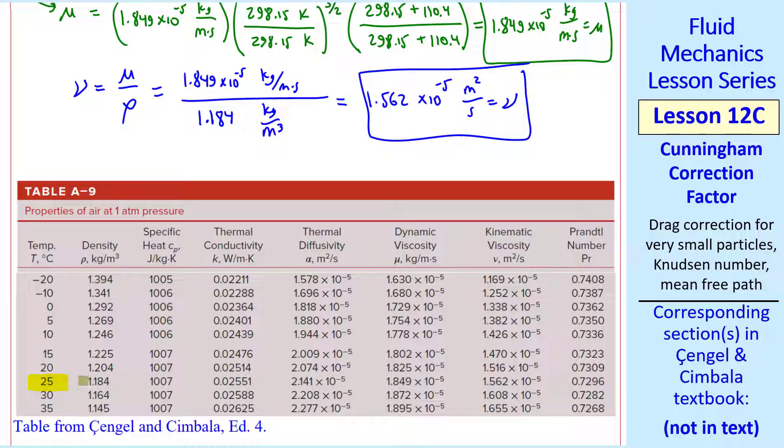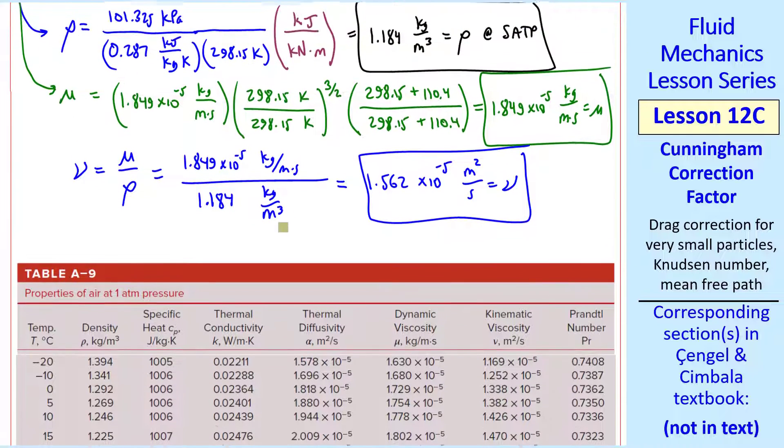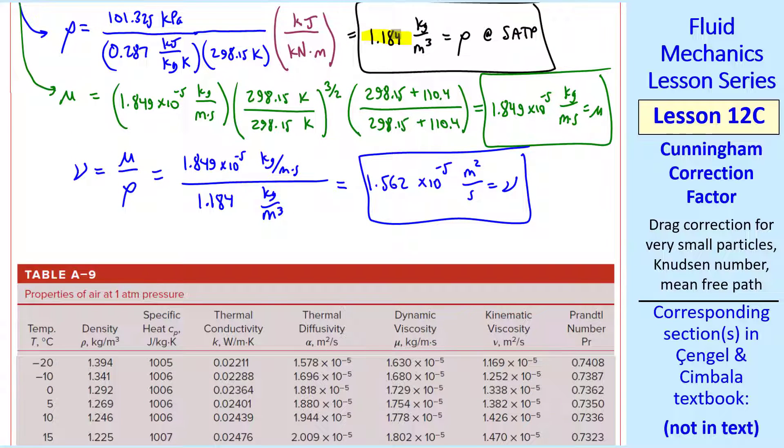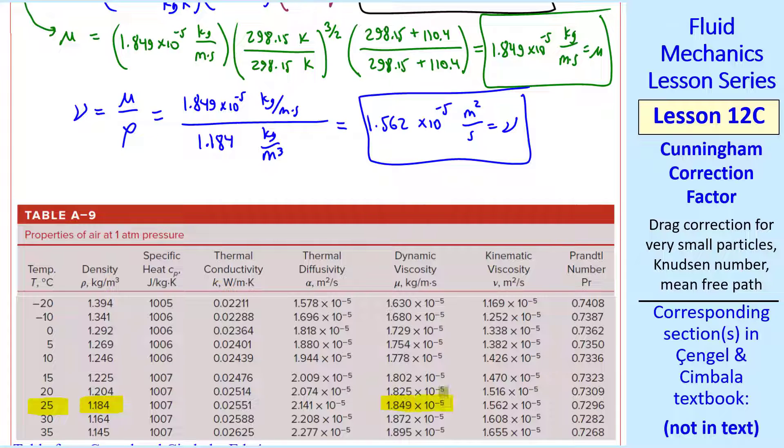At 25 degrees C, the density is 1.184, which agrees with this. The viscosity is 1.849 times 10 to the minus 5, with the same units. And the kinematic viscosity also agrees with our calculations.